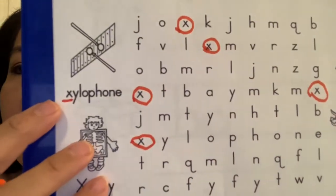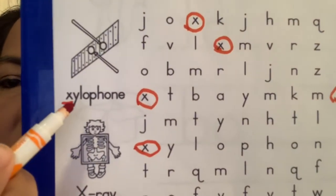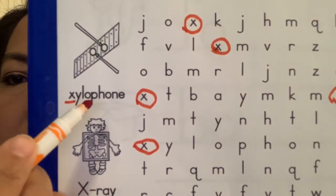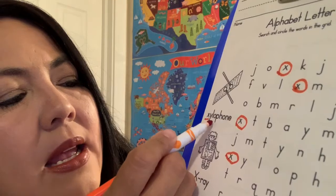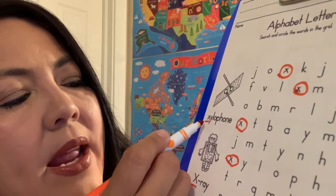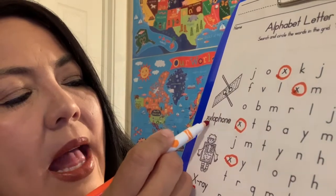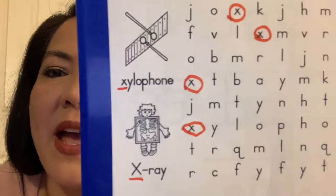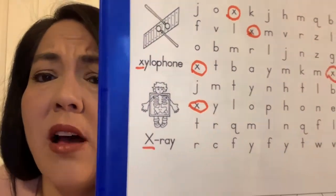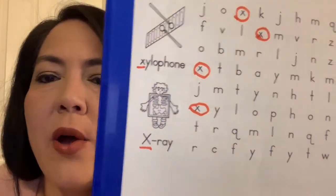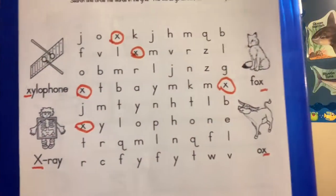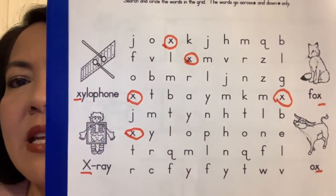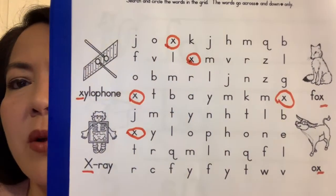And xylophone, let's do that one more time — it's X-Y-L-O-P-H-O-N-E. Finally, Miss Lisa got it right. That's a really long one. So let's see if we see any of our words that either end in X or start with X. Let's start at the top here. Do I see any X words?